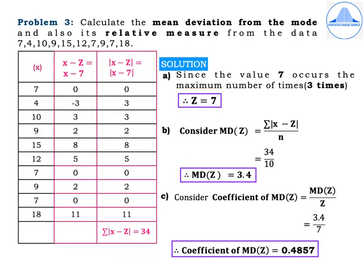Problem 3: calculate the mean deviation from the mode and also its relative measure from the data: 7, 4, 10, 9, 15, 12, 7, 9, 7, and 18. Mark the first column as x and list the values given. Subdivision A: the first step is to find the mode for raw data — the mode is that value which repeats the maximum number of times. Here, the value 7 occurs the maximum number of times, that is thrice. Therefore Z = 7.